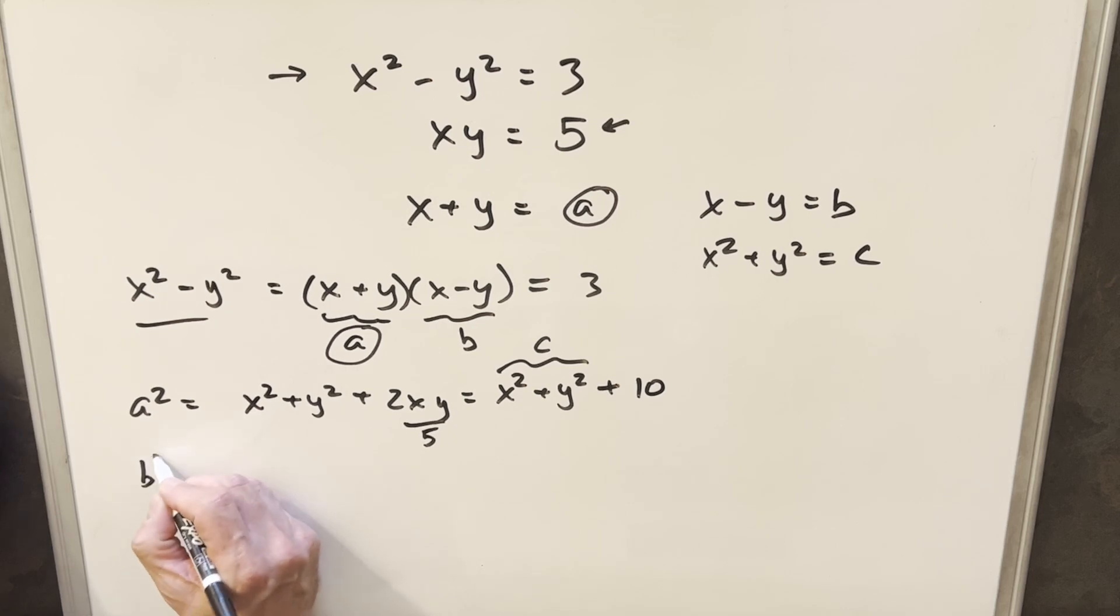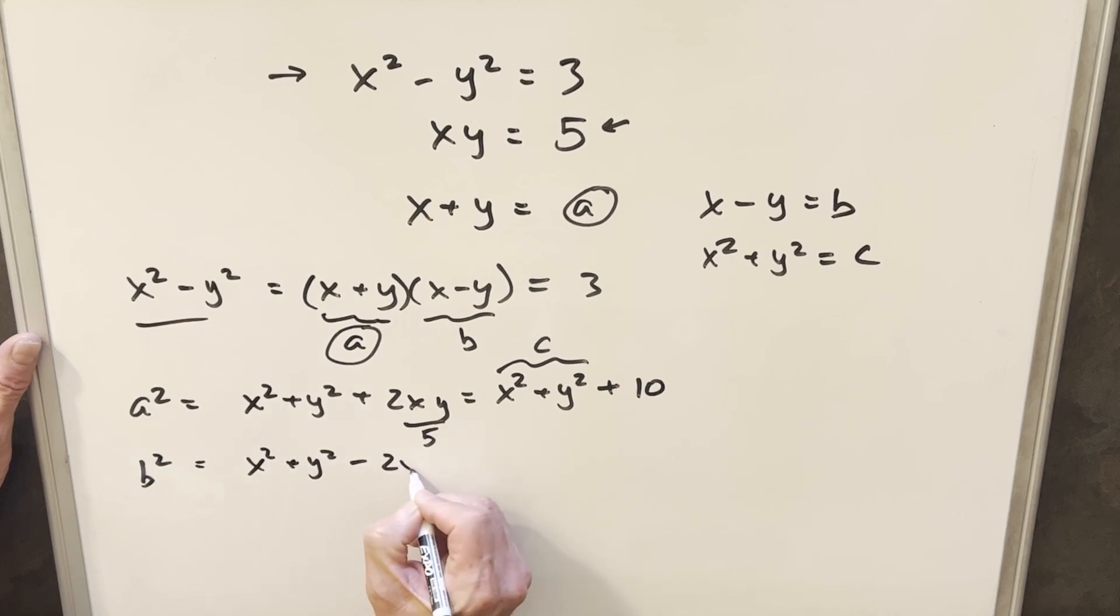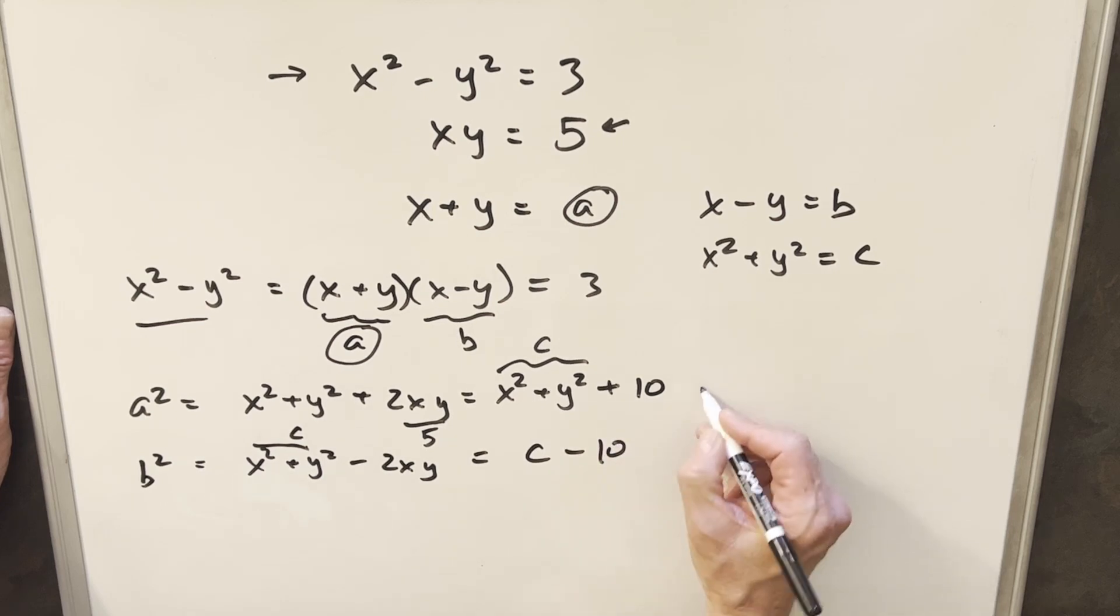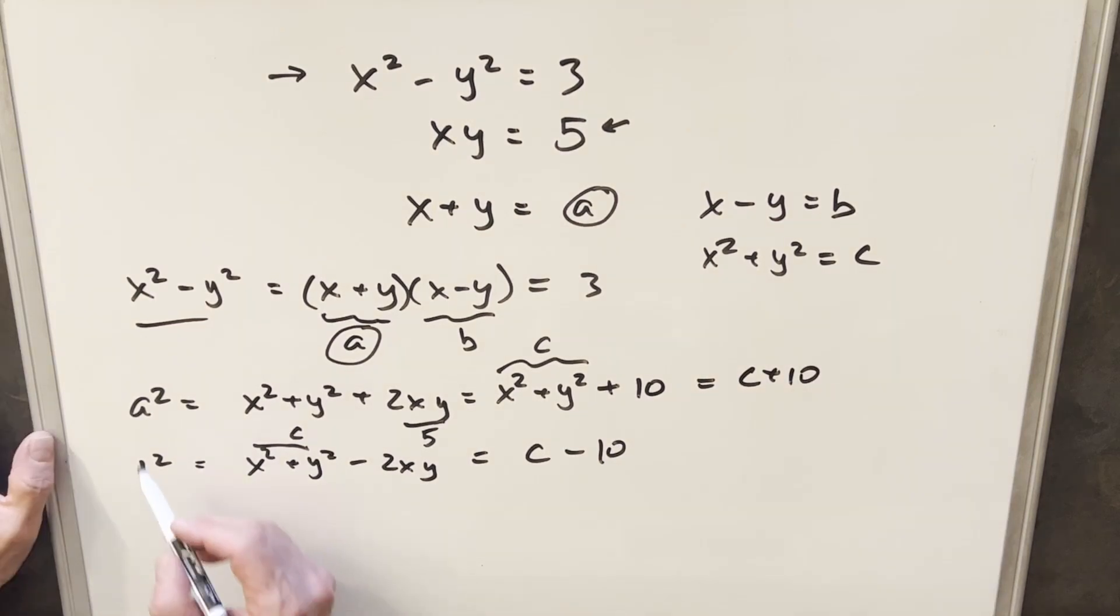And then from here, what we're going to do is the exact same thing with our b. So I'm going to square b squared, and that's going to give me x squared plus y squared minus 2xy. But again, we'll call this c. So this is going to be c minus 10. And again, this is c plus 10.